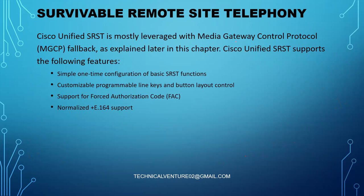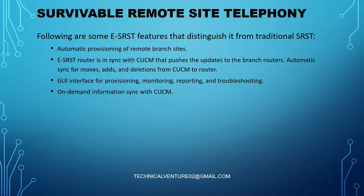Cisco Unified SRST is mostly leveraged with the MGCP fallback. It's a simple one-time configuration supporting basic SRST functions, customizable programmable line keys, button layout control, support for FAC, and 64-party support. Enhanced SRST distinguishes itself with automatic provisioning of remote branch sites, sync with CUCM that pushes updates to branch routers for move/add/deletion, a GUI interface for provisioning, monitoring, reporting, troubleshooting, and on-demand information sync with CUCM.